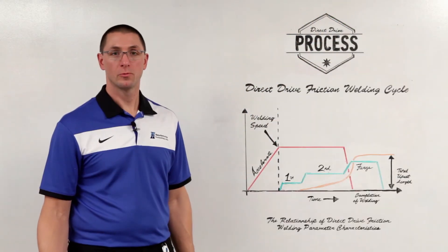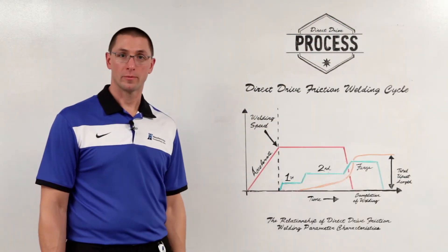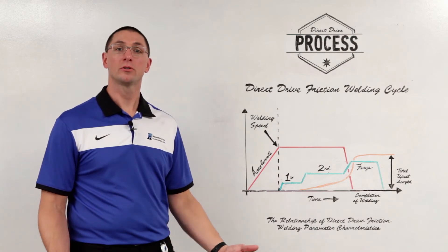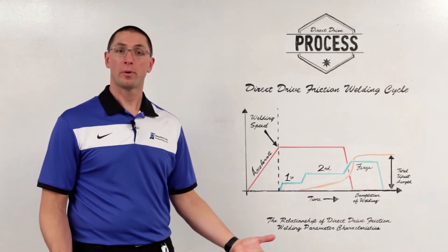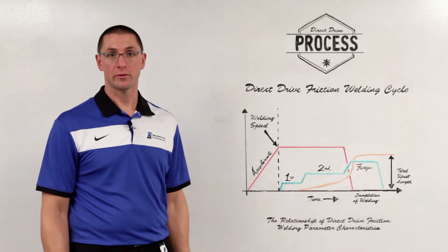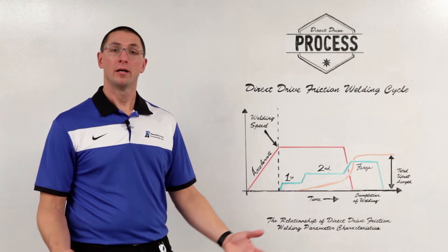Direct drive friction welding is the oldest form of rotary friction welding and it can be used to join a variety of part geometries and materials, making a solid state joint with high quality.